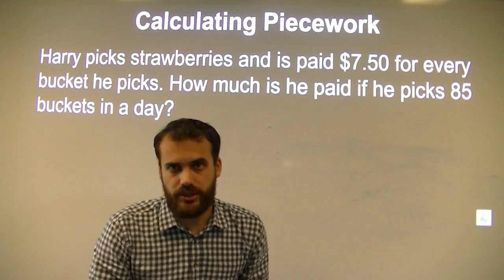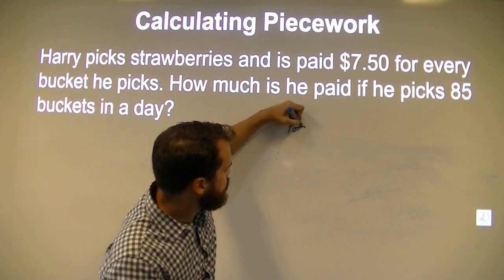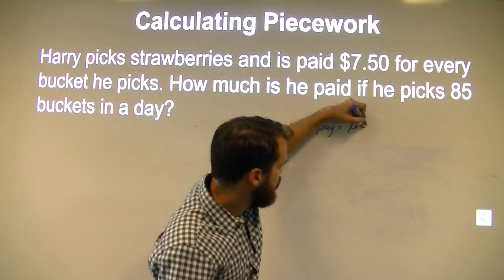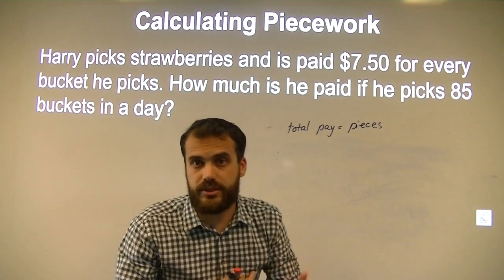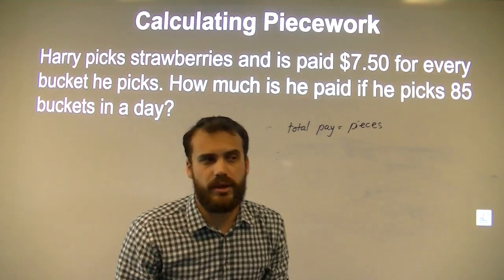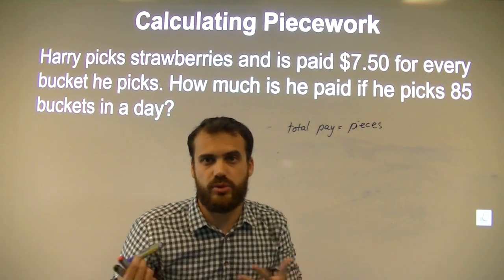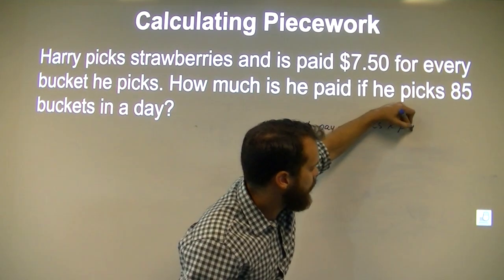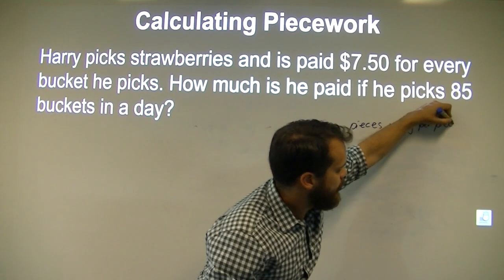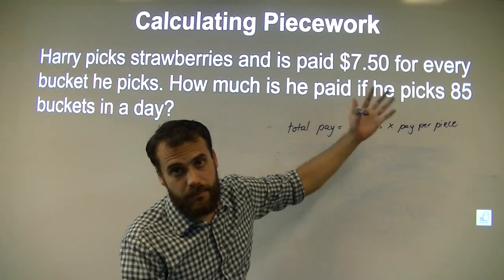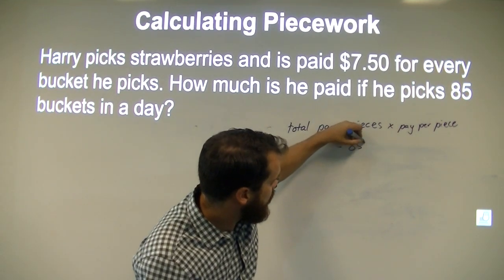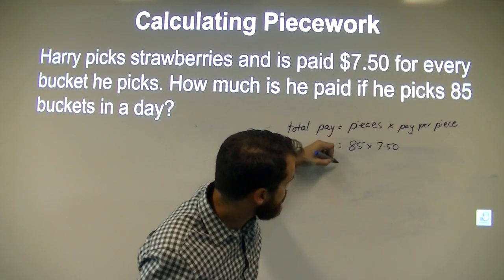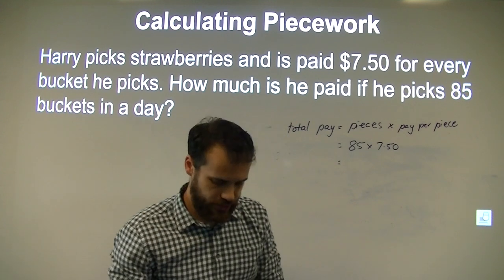The more buckets you pick, the more you get paid. So this guy's total pay is going to be equal to the pieces that he picks, creates, or sells. This is often used for people in manufacturing — people making jeans or wallets or something like that. Total pay equals pieces times pay per piece. In this case the pieces are 85 buckets of strawberries, and his pay per piece is $7.50.